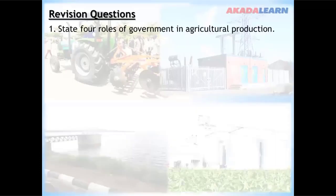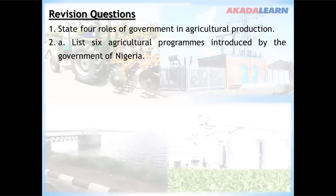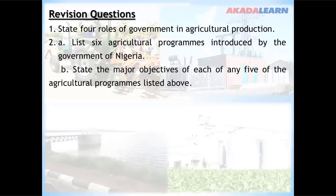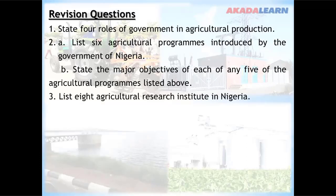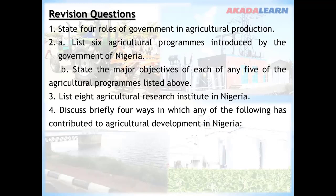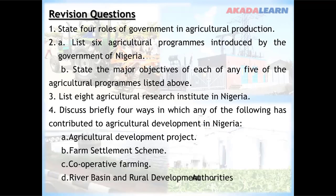Practice questions: State four roles of government in agricultural production. List six agricultural programs introduced by the government of Nigeria. State the major objectives of any five of the agricultural programs listed above. List eight agricultural research institutes in Nigeria. Discuss briefly four ways in which any of the following has contributed to agricultural development in Nigeria: Agricultural Development Projects, Farm Settlement Scheme, Cooperative Farming, or River Basin and Rural Development Authorities. If you find it difficult, go over the video again. Thank you for being on this platform today. Have a great day.